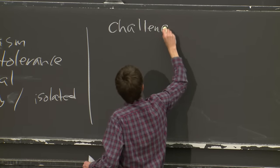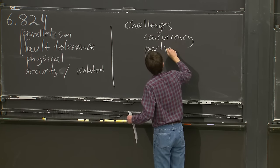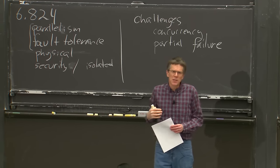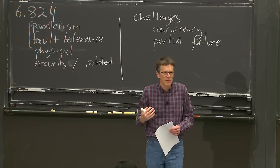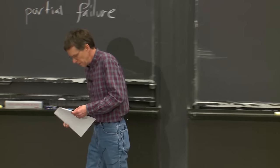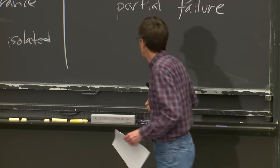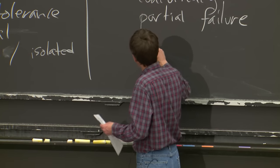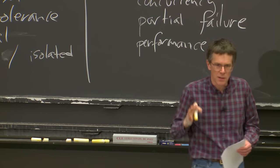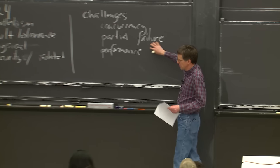Partial failures are another reason distributed systems are hard. A final reason is performance: the original motivation to build a distributed system is often to get 1,000 computers' worth of performance, but it's actually very tricky to obtain that 1,000x speedup. There are often many roadblocks, and it takes careful design to make the system actually give you the performance you feel you deserve.